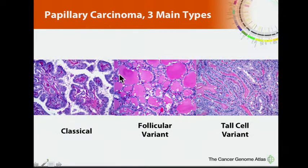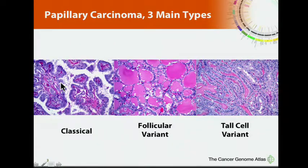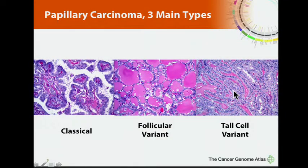As a professor of pathology, I have to show some histology. Papillary carcinoma, which is what our project is on, has three main types and it will come through in the data. Papillary carcinoma gets its name from tumors with finger-like projections or papillae, but not all papillary carcinomas are actually papillary in architecture. There's the follicular variant — not to be confused with follicular carcinoma — and the tall cell variant, in which the cells are more columnar than cuboidal. These three variants have different genetic profiles and different gene expression profiles.